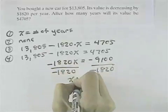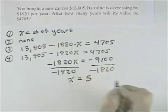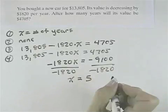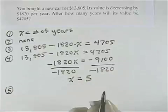When we do that, we'll be left with X, and the negatives cancel, so X will equal 5. So that means the value of the car will have decreased to $4,705 after five years.